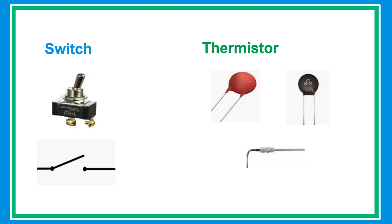The term thermistor is a combination of thermal and resistor. It is made up of metallic oxide. There are two types of thermistor: negative temperature coefficient and positive temperature coefficient. With negative temperature coefficient thermistors, when temperature increases, resistance decreases. Conversely, when temperature decreases, resistance increases.